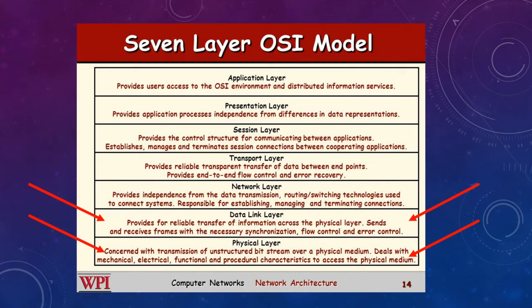The data link layer also handles flow control and error control. We haven't talked much about flow control, but we have mentioned error control — parity bits, block check characters, cyclic redundancy checks, and things like that. So a lot of what we talk about today is just elaborating on points we brought up earlier.